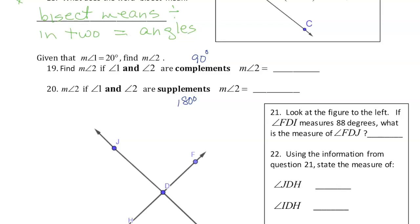If the measure of angle 1 is 20 degrees, find the complement — it's going to be 70 degrees, because 90 minus 20 gives me 70. If angle 1 and angle 2 are instead supplements, then 180 minus 20 equals 160 degrees, so the measure of angle 2 is 160 degrees.